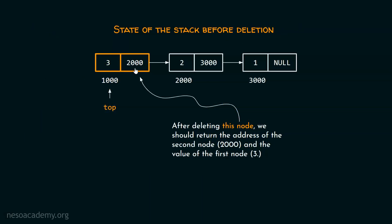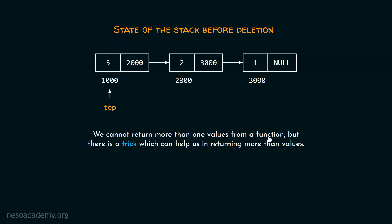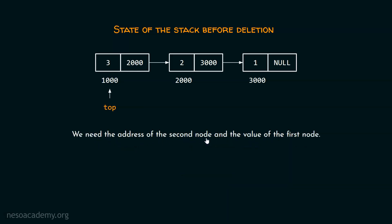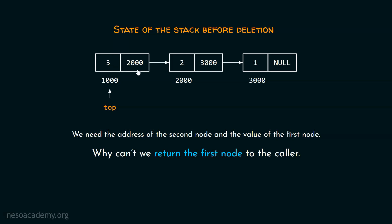But there is a trick. After deleting the node, we should return the address of the second node and the value of the first node together. We cannot return more than one value from a function, but the trick is simple: return a structure instead. We can think of a structure as a user-defined type which consists of multiple types. We want to return both the address and the value, so we can return a structure from the function. Why not return the first node itself? The first node contains the value of the first node and the address of the second node, so we can return the whole node back to the caller from the pop function.